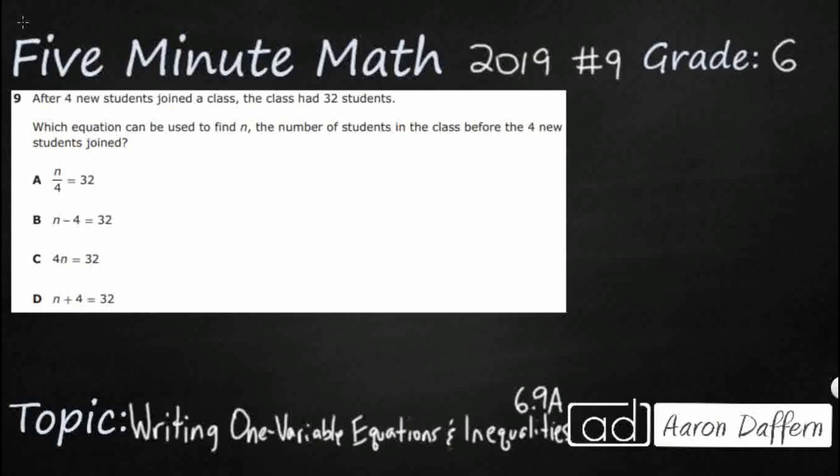Hello and welcome to 5-Minute Math. Today we are looking at the sixth grade concept of writing one step one variable equations and inequalities. This is standard 6.9a in the great state of Texas and we are using item number nine off the 2019 released STAR test.